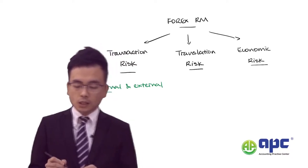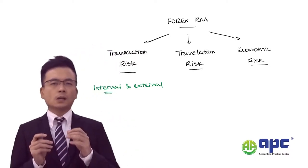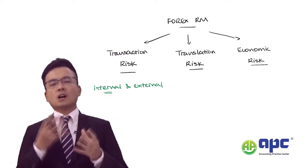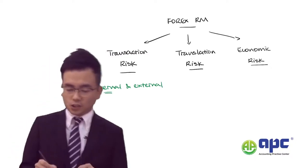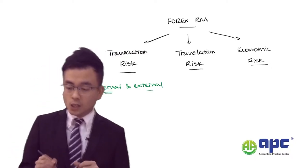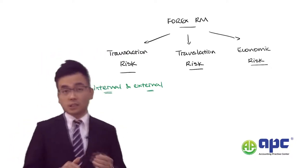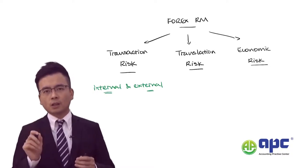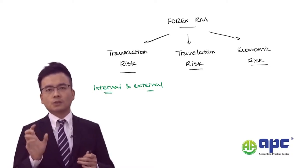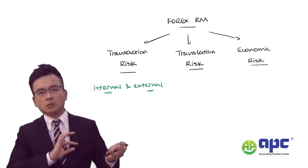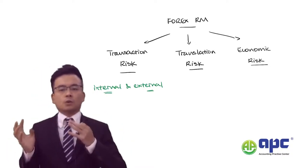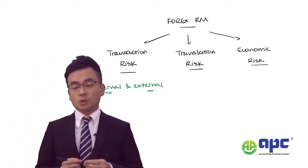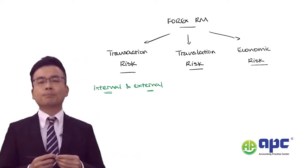We use either internal or external ways to deal with transaction risk. The internal way is invoicing in our own currency. External ways include entering into financial instruments such as futures contracts or forward contracts.